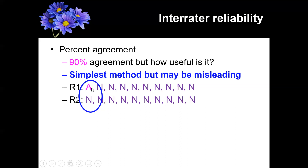That's where percent agreement can be misleading: if you have very lopsided behaviors where aggression is not occurring frequently, you can get the impression that your researchers are in agreement even when they might not be.